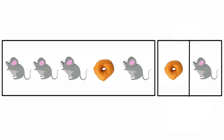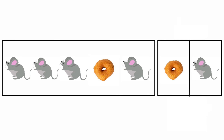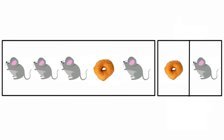Then look at the next set of patterns. There are three rats and one vada. The first set is three rats, one vada. Then one rat - and what comes next? Yes, the rat comes next. So here we need to take rat.